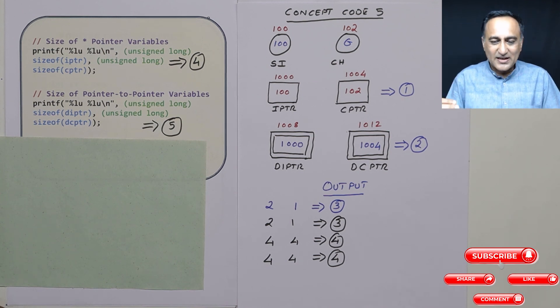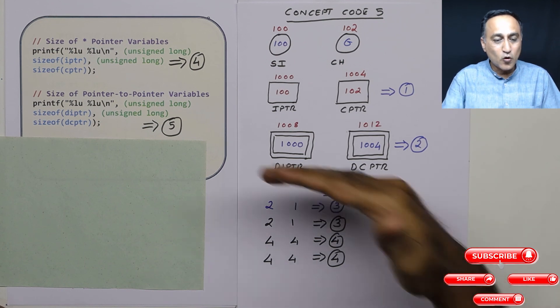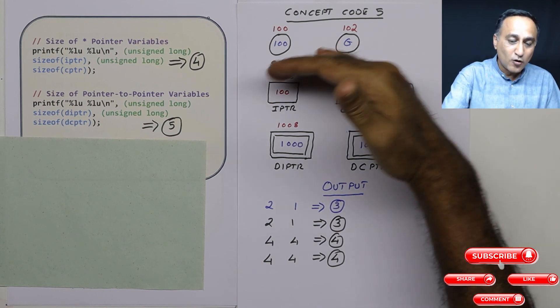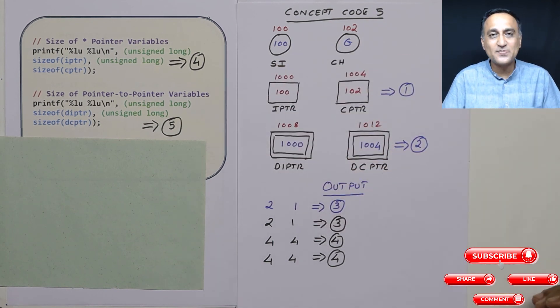To get a better understanding of this concept code 5, please take a look at the following demo of this particular code which has been executed. So you will really understand all these address and size of these concepts very well.